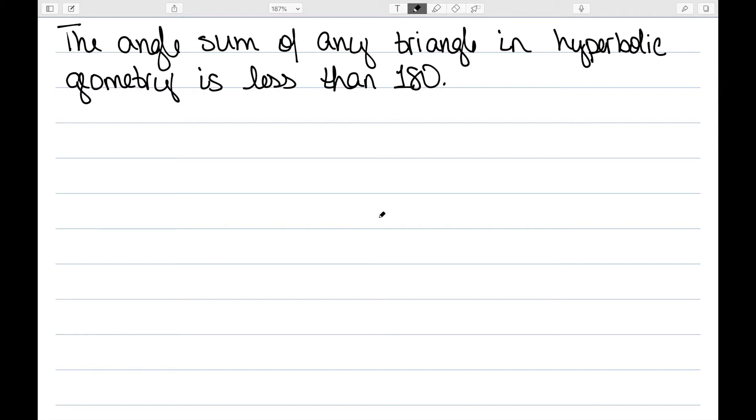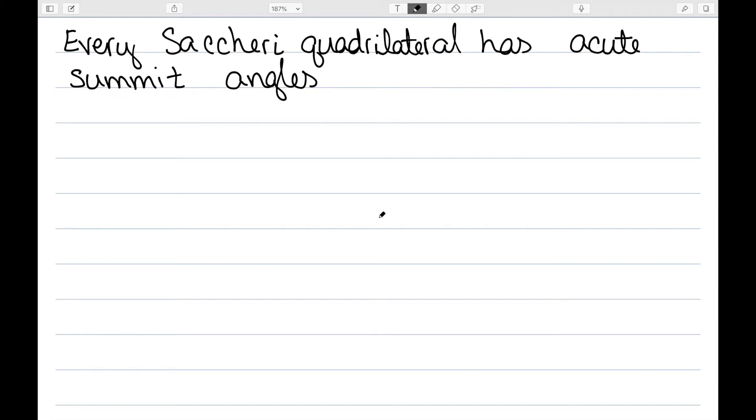However, it does give us some very interesting corollaries. The first of our corollaries, every Saccheri quadrilateral has acute summit angles. So if I have my Saccheri quadrilateral in hyperbolic space, then my two summit angles should be acute.